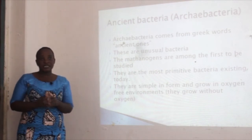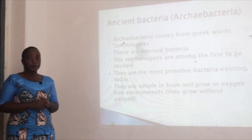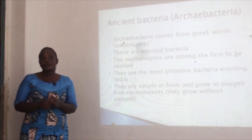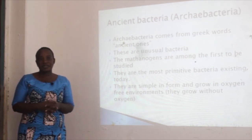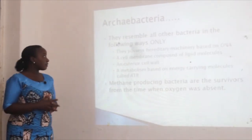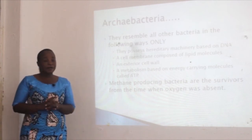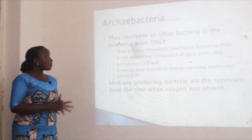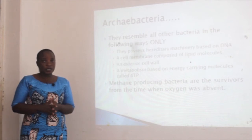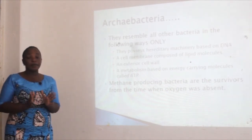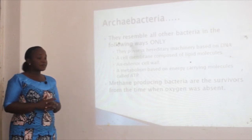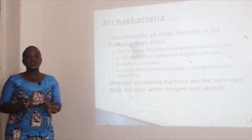Methanogens are found in foam and grow in an oxygen-free environment — they cannot grow in the presence of oxygen; in fact, oxygen poisons them. So these were the first bacteria to exist on earth. The archaea resemble all other bacteria in the following ways: they possess hereditary machinery based on DNA, they have a cell membrane composed of lipid molecules, they have an exterior cell wall, and they have a metabolism based on energy-carrying molecules called ATP. The methane-producing bacteria are survivors from the time when oxygen was absent.